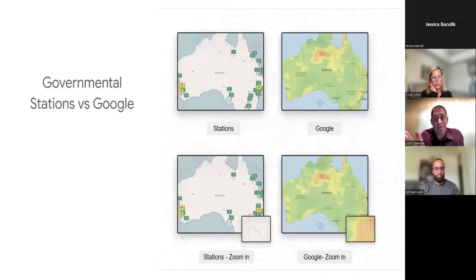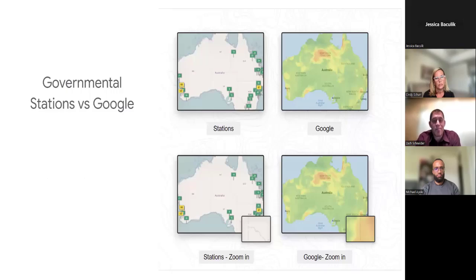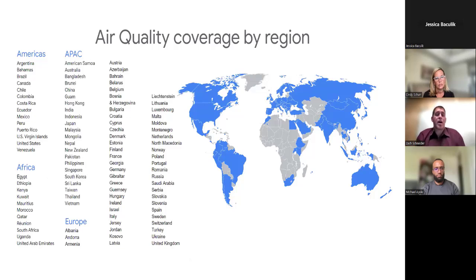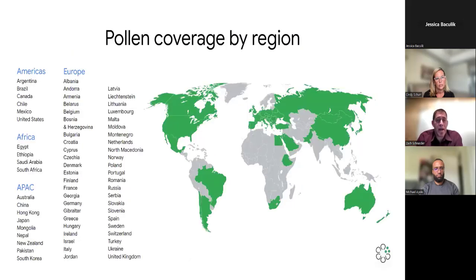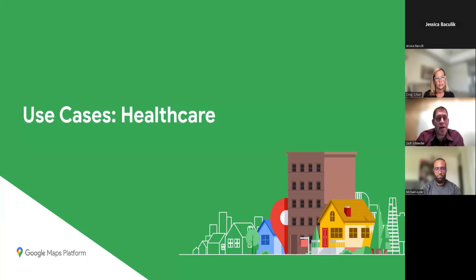Our air quality coverage is global — in over 100 countries currently, and we're adding more all the time. Pollen is also global, based on over 70 countries, and is constantly being updated with more coverage.